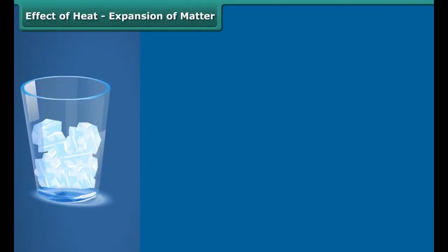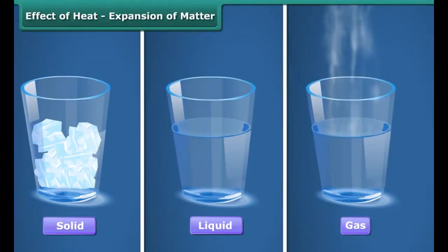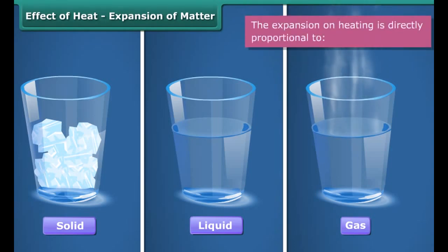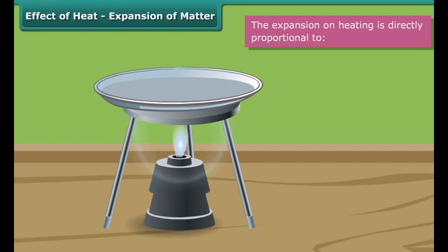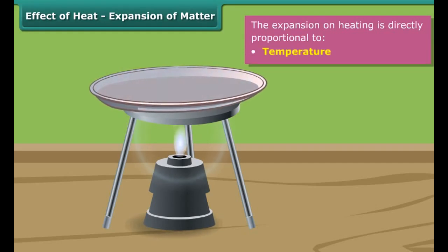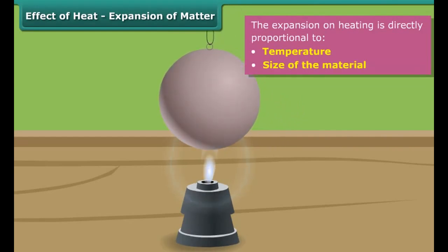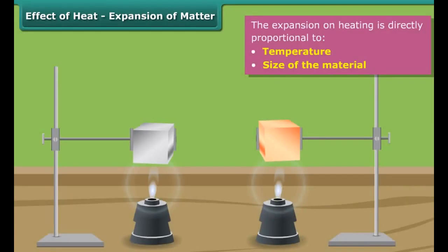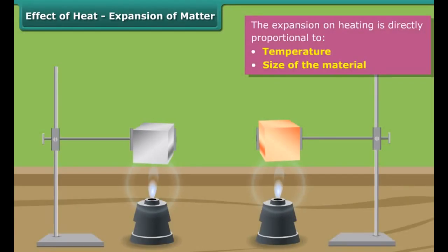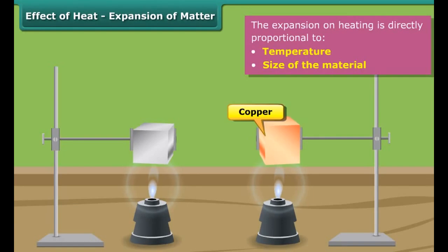Matter exists as solid, liquid, and gas. All three states of matter expand on heating. The expansion of matter depends on the temperature through which it is heated — the higher the temperature, the more the expansion. Expansion also depends on the size of the material being heated; the longer the plate or bigger the bowl, the more the expansion for the same rise in temperature. The nature of the material also plays an important role. For example, copper expands more than iron for the same rise in temperature.